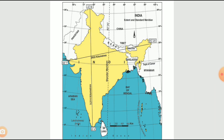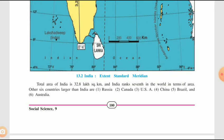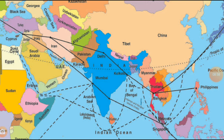The total length from Jammu and Kashmir to Kanyakumari in the south is 3,214 kilometers. The total area of India is 32.8 lakh square kilometers, and India ranks 7th in the world in terms of area. The countries with a larger area than India are Russia, Canada, USA, China, Brazil, and Australia.